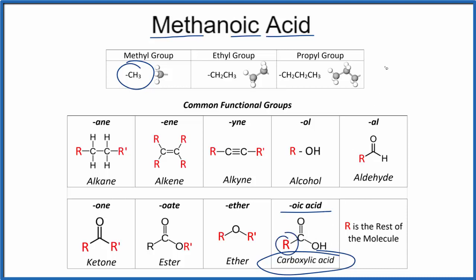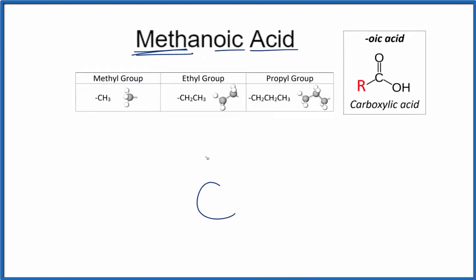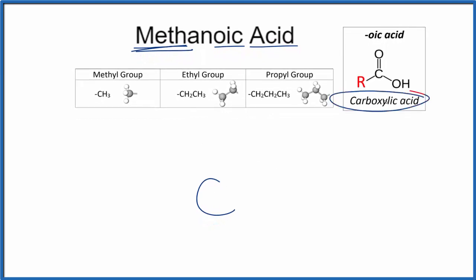So let's move this up here and write the formula for methanoic acid. Because of meth we're going to have just one carbon. When we look at the carboxylic acid functional group we have our carbon. It has a double bonded oxygen and then it has this OH. That's an alcohol group. We'll put that right out here.